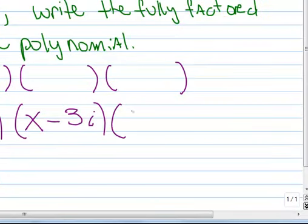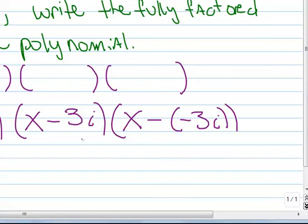So our third factor is x minus negative 3i, and of course I can simplify this to be x plus 3i.